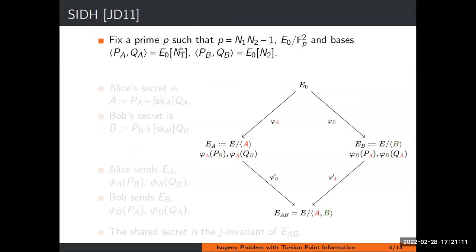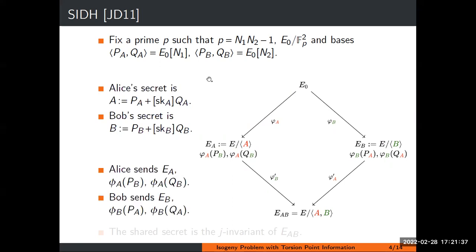Let me present the scheme SIDH in some detail. So let N1 and N2 be two large, smooth numbers, usually powers of two and three, but that's not quite necessary. And P is N1 times N2 minus one, sometimes with a small cofactor. The starting curve is defined over Fp squared. Alice's secret is an isogeny going from E0 to the curve Ea, and Bob's secret is an isogeny going from E0 to Eb.